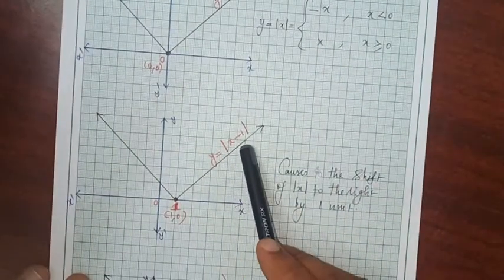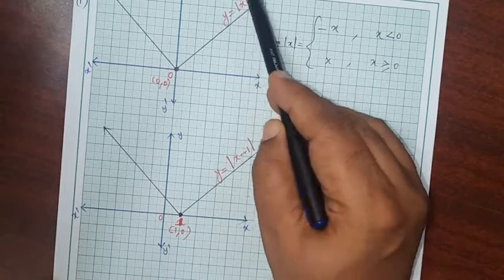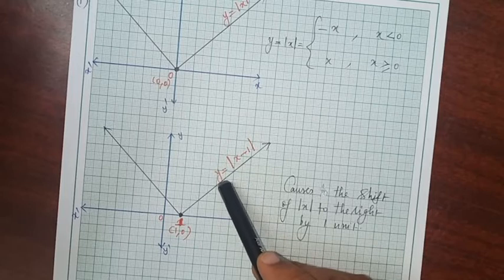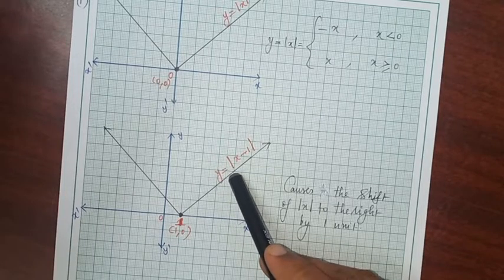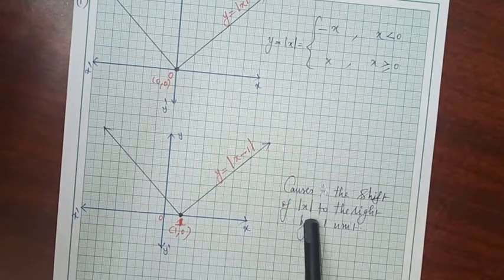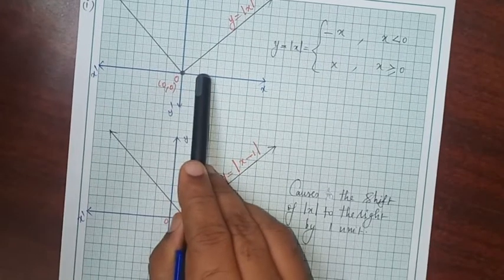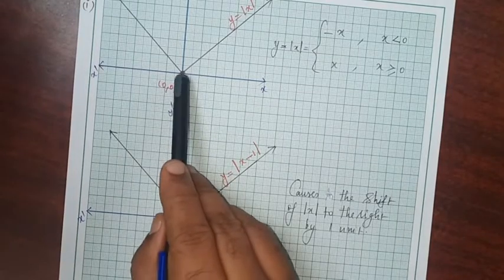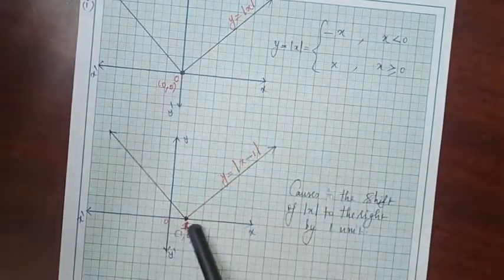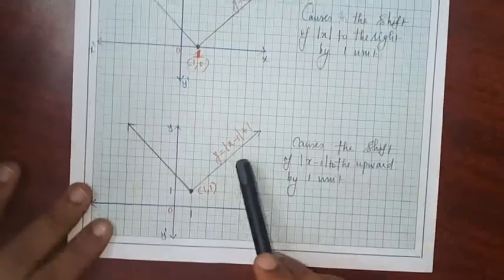Now for y = |x - 1|. Here 1 is subtracted from x only, not from modulus of x. So this is of the form f(x - c). The form f(x - c) causes the shift of y = |x| to the right by 1 unit. It was passing through (0, 0); shifted right by 1 unit, it now passes through (1, 0). Without changing the shape, draw the diagram.